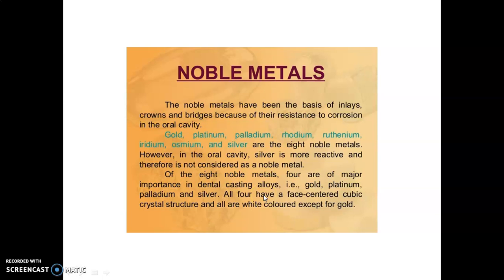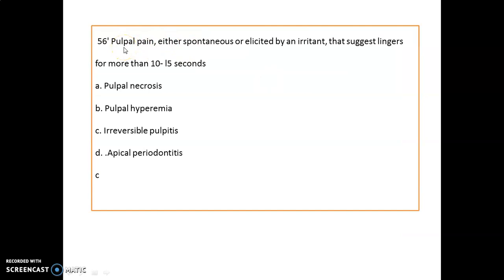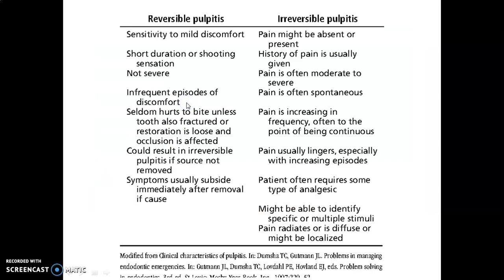Question six: pain that is either spontaneous or elicited by an irritant and lingers for more than 10 to 15 seconds indicates a case of irreversible pulpitis. That is the key difference between reversible and irreversible pulpitis. Note that the terminology has changed — instead of reversible and irreversible, we now use symptomatic pulpitis and asymptomatic pulpitis. Examinations may ask for the current name for reversible or irreversible pulpitis.